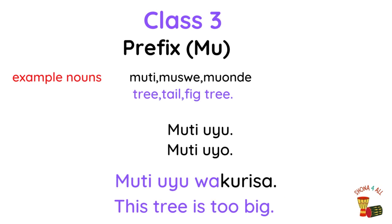Class 3, prefix mu. Example nouns: muti, muswe, mwonde. Most of the nouns in this class are plants, but they can also include a few other words which are not necessarily plants.